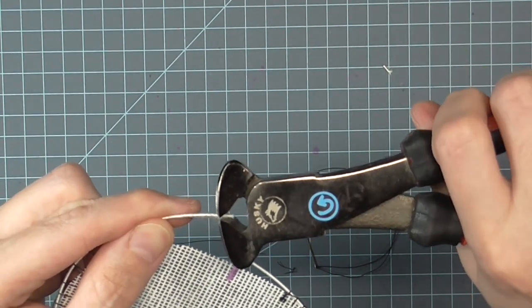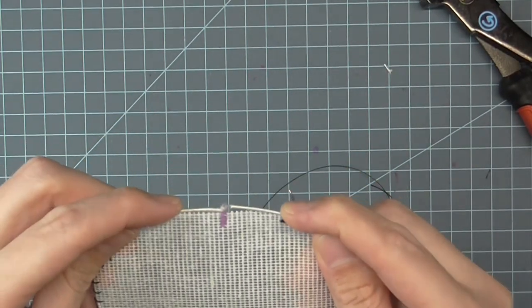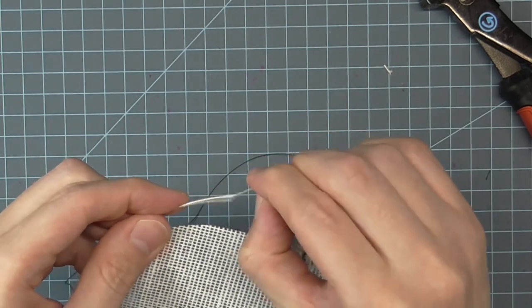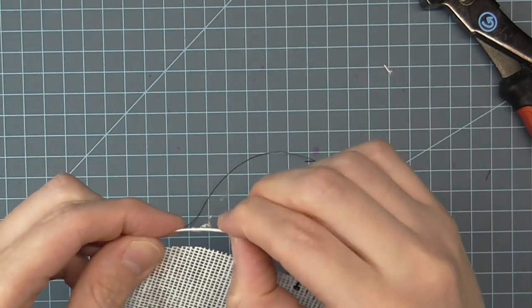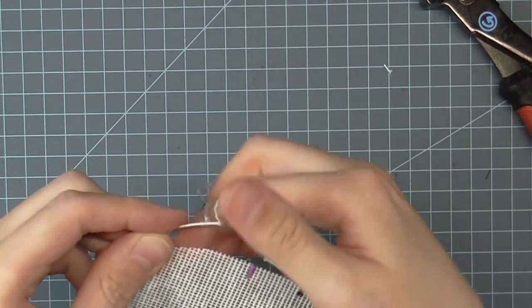On one end, clip off about a sixteenth of an inch of wire. This ensures the two ends will not butt together in the joiner. Unravel the wrapping on both ends of the wire about three-eighths of an inch. Snip off the unraveled wrapping.